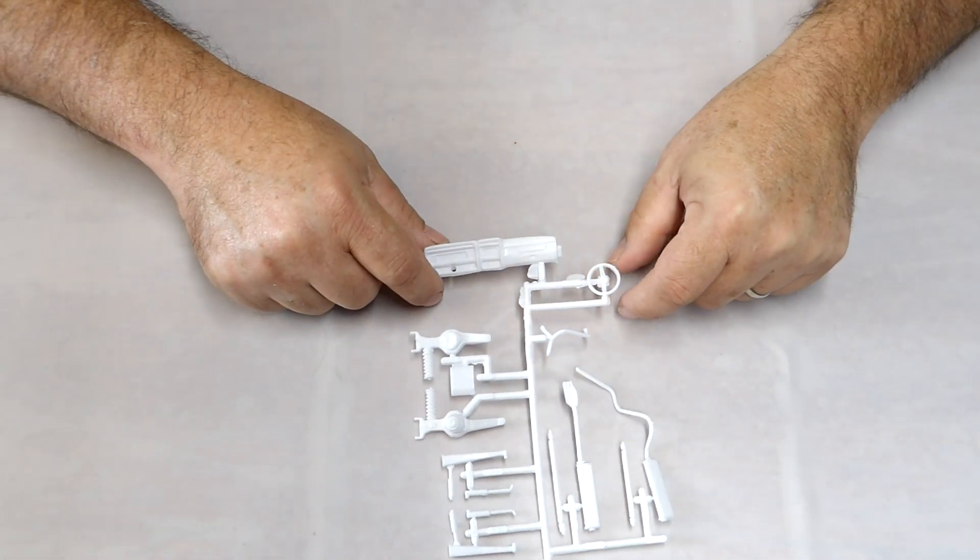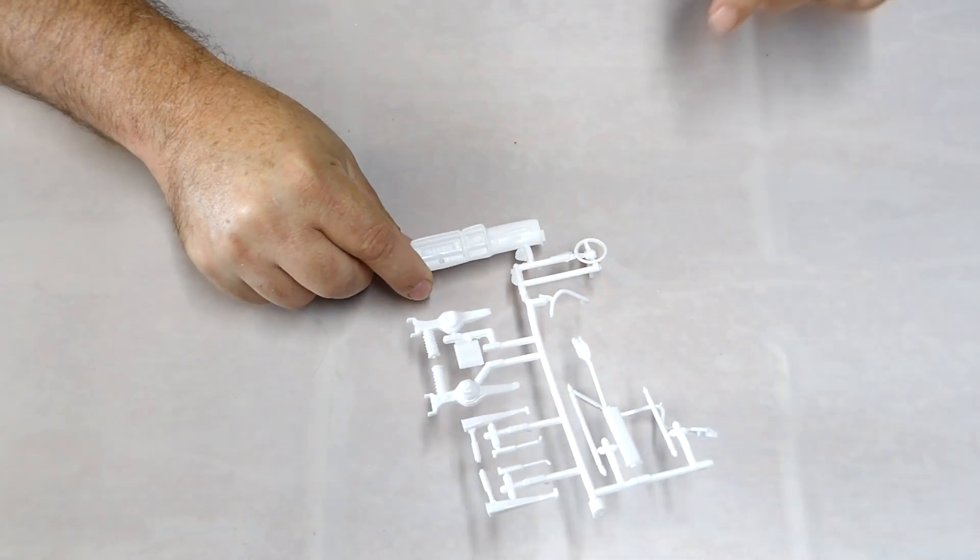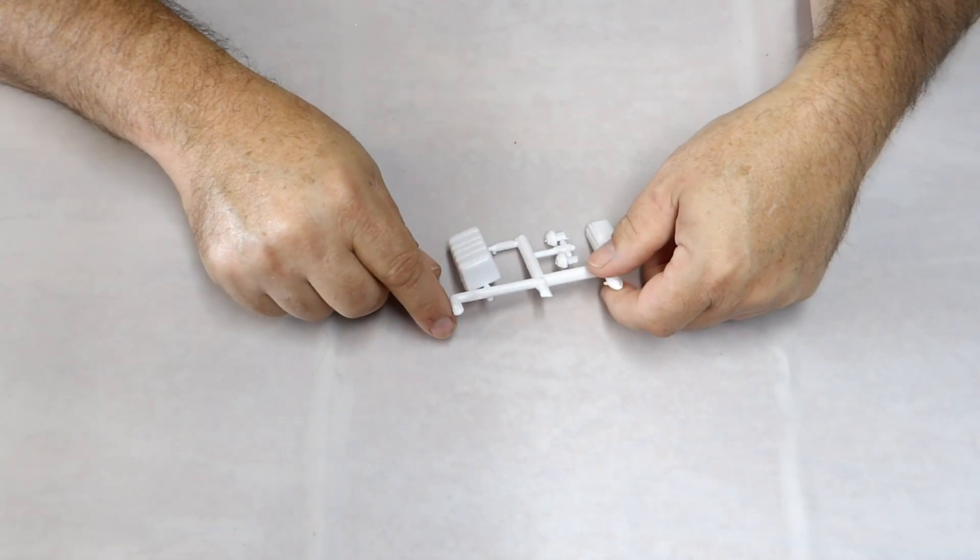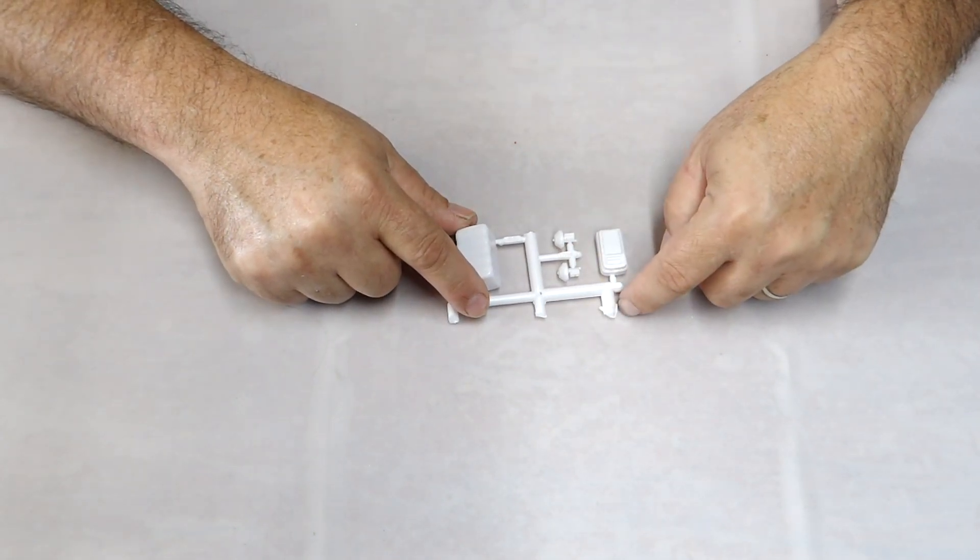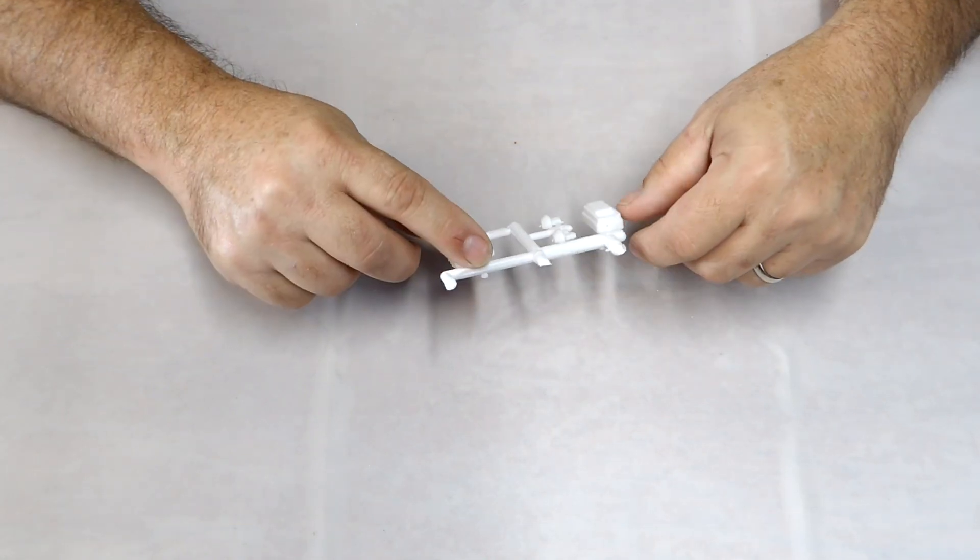Here's your steering wheel, your dash, looks like it's molded pretty well. Here's your fuel tank, your brake booster, master cylinder, and your center console.